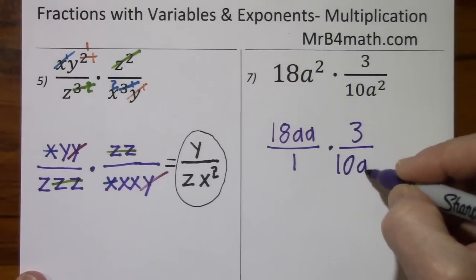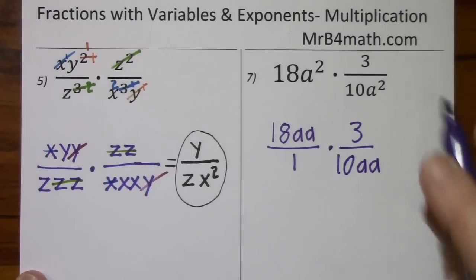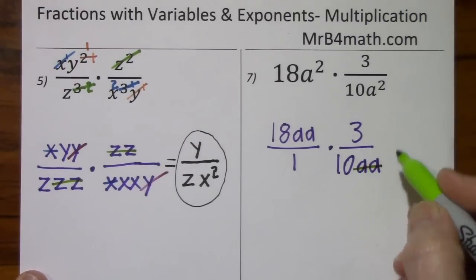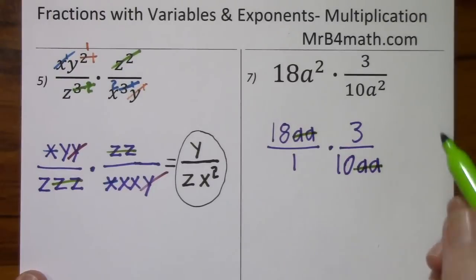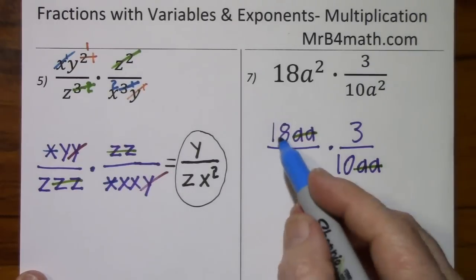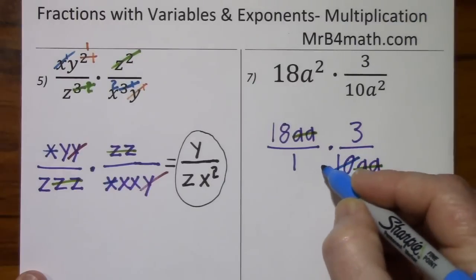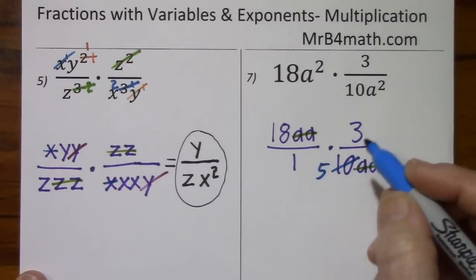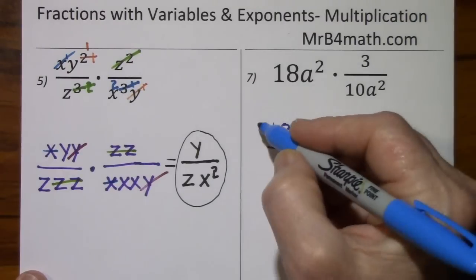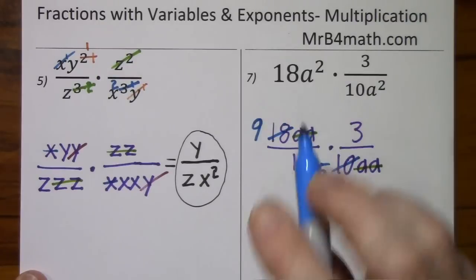And that's a times a. So these two a's cancel those two a's. With the 18 and the 10, two is a common factor. Two goes into 10, five times. Two goes into 18, nine times.